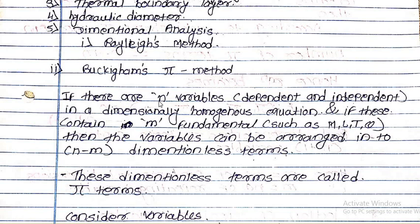So n is the total number of all variables including dependent and independent. Now, what is meant by a dimensionally homogeneous equation? It is an equation whose left-hand side dimensions are equal to the right-hand side dimensions. The total number of fundamental dimensions included in that particular phenomenon is denoted by m.